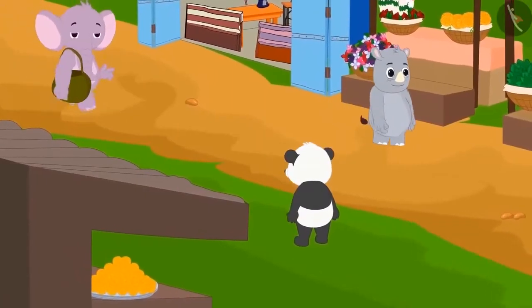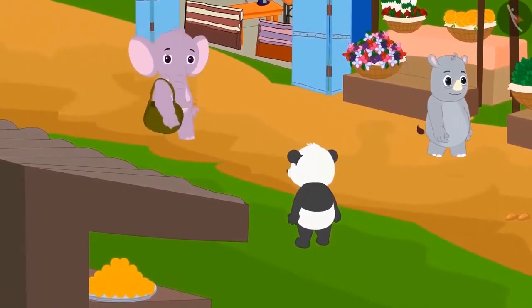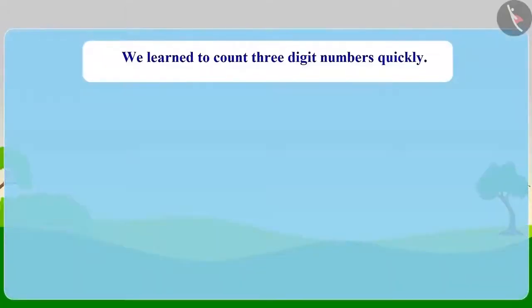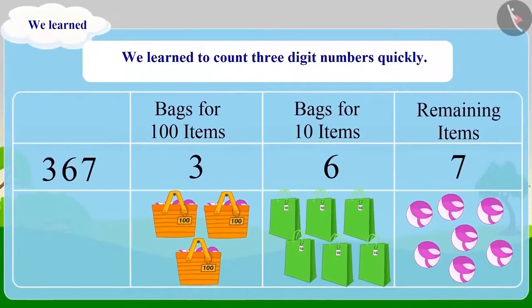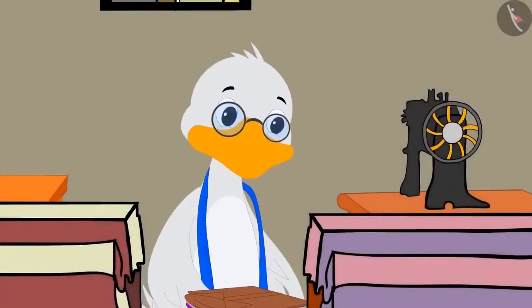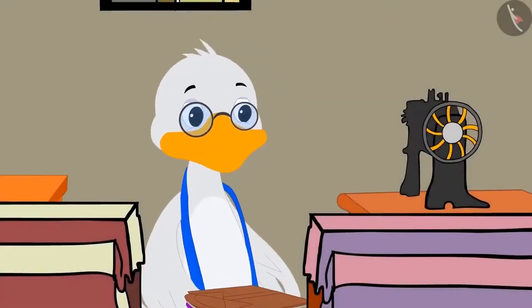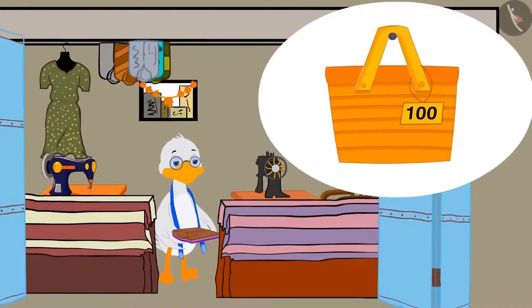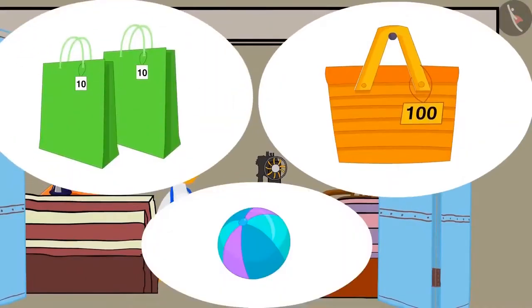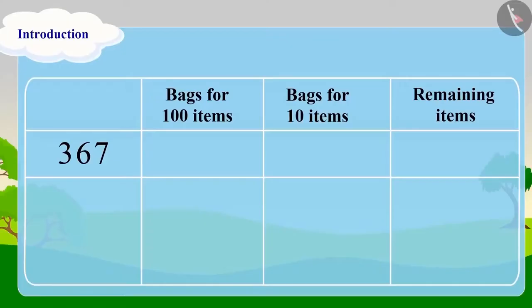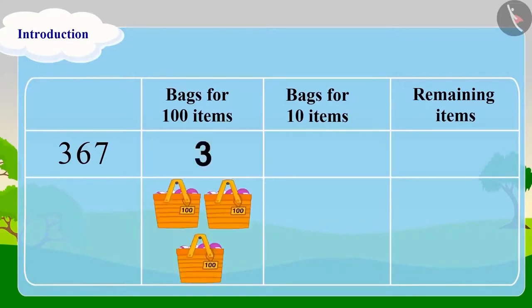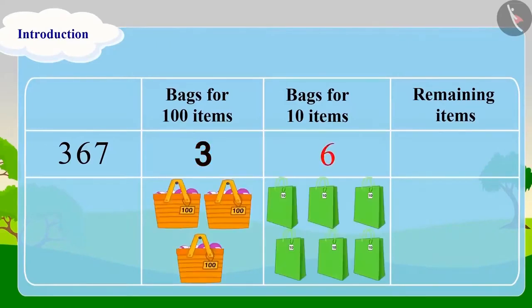Do you remember Appu's visit to the market? We learnt to count 3-digit numbers quickly by grouping. We learnt to write 3-digit numbers in groups of 100, 10 and 1 with the help of Batak Uncle's bags. In the same way, we can write any 3-digit number in groups of 100, 10 and 1.